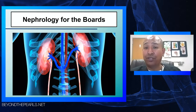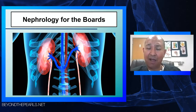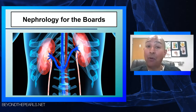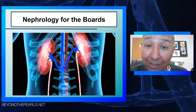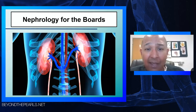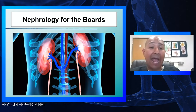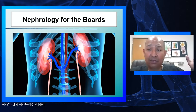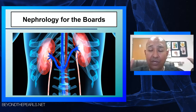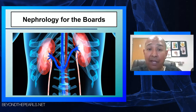Let's talk about nephrology for the board exams. Dr. Raj is a big fan of the kidneys, like almost every organ in the body. When I think about nephrology, it is essential when we talk about things like acid-base. For the lungs, it's all about the CO2, and when we talk about the kidneys, it's all about the bicarb.